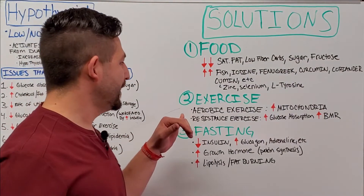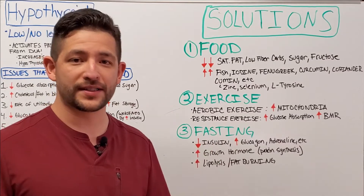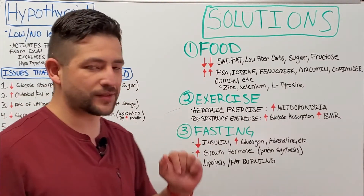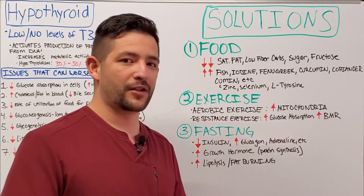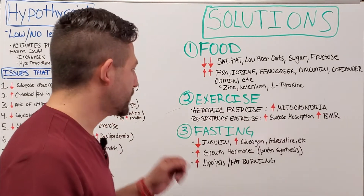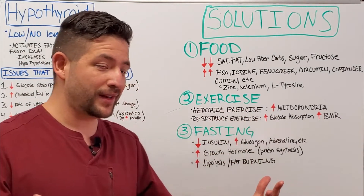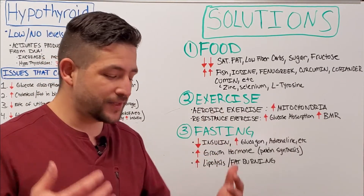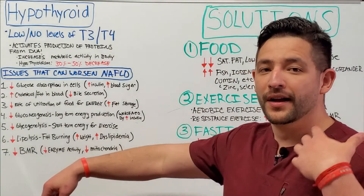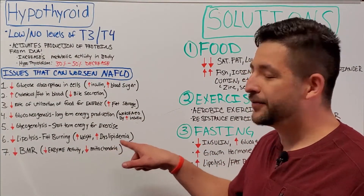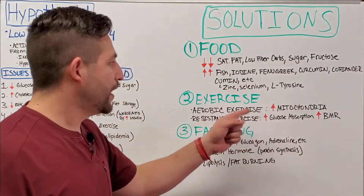Now let's talk about exercise. The first type is aerobic exercise — things like running, sprinting, and walking, anything that raises your heart rate. Aerobic workouts are really important because they promote the production of more mitochondria. Runners and sprinters tend to develop far higher amounts of mitochondria, making them more efficient. This is important because one of the key issues with hypothyroid is that we need to increase mitochondria numbers and activity in the body to help boost and offset the metabolic slowdown.